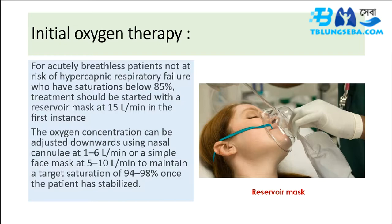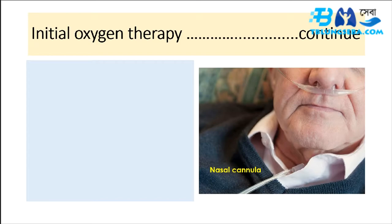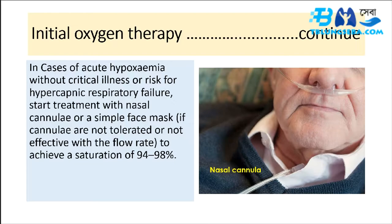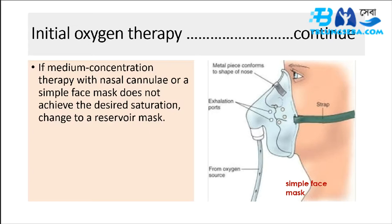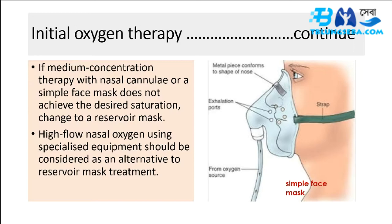In cases of acute hypoxemia without critical illness or risk for hypercapnic respiratory failure, start treatment with nasal cannulae or a simple face mask at a flow rate to achieve a saturation of 94 to 98%. If medium concentration therapy does not achieve the desired saturation, change to a reservoir mask. High flow nasal oxygen using specialized equipment should be considered as an alternative to reservoir mask treatment.